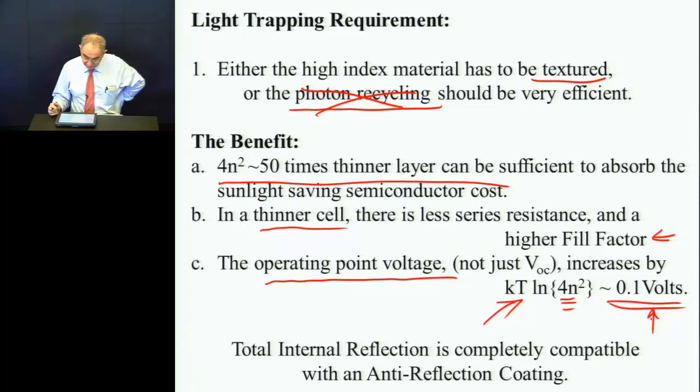And if the cell is thinner, often there's less series resistance, and you improve the fill factor. But here's a very important point. Remember I said there's more free energy if it's concentrated. That light inside that material is concentrated by 4n squared. And so you get the voltage boost associated with that. And that's a little bit less obvious than you're just absorbing light better. You're actually boosting the voltage. It's quite substantial. It's a tenth of a volt at the operating point. A lot of silicon cells operate at around half a volt. So this could potentially boost the silicon solar cell from half a volt to six tenths of a volt. It's a very good benefit.